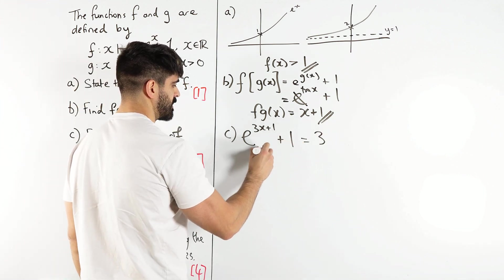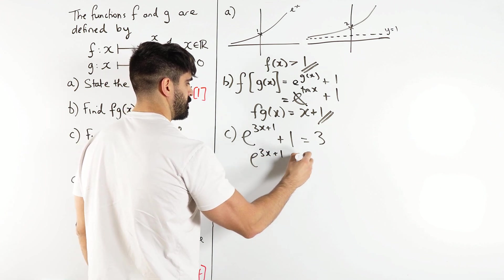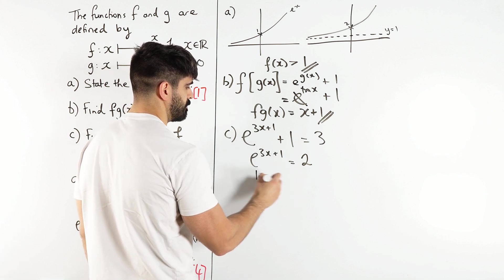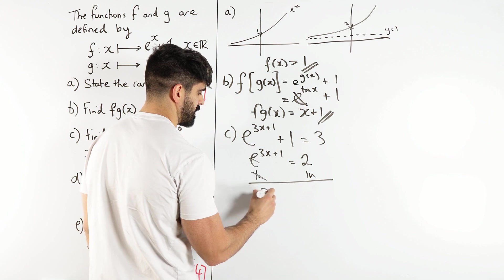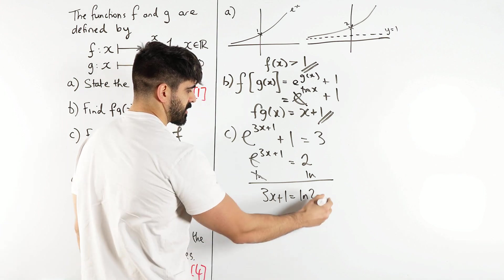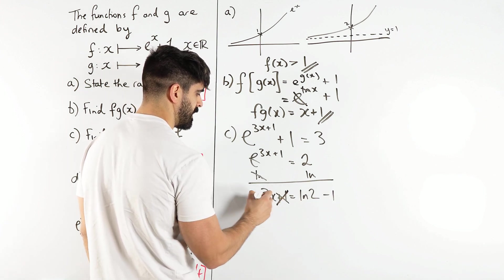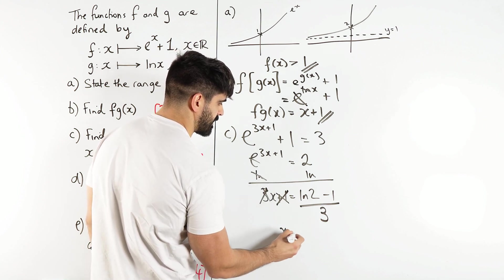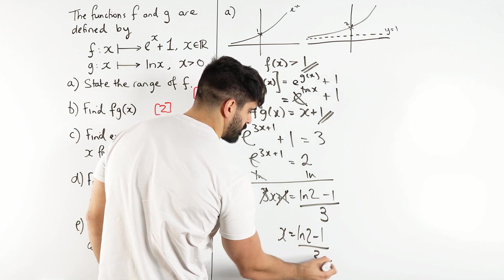So we subtract 1 from both sides, we get 2. Then we inverse e to the power, which is ln both sides. So we get 3x + 1 = ln(2). Then we're going to subtract 1 from both sides and then divide through by 3. So there's our answer: x = (ln(2) - 1)/3.